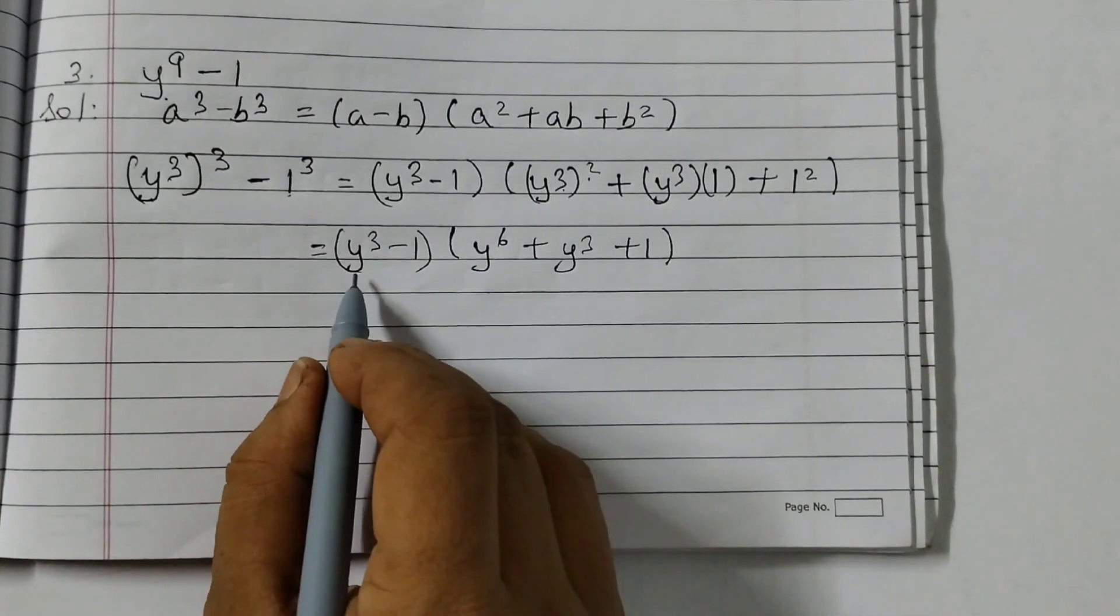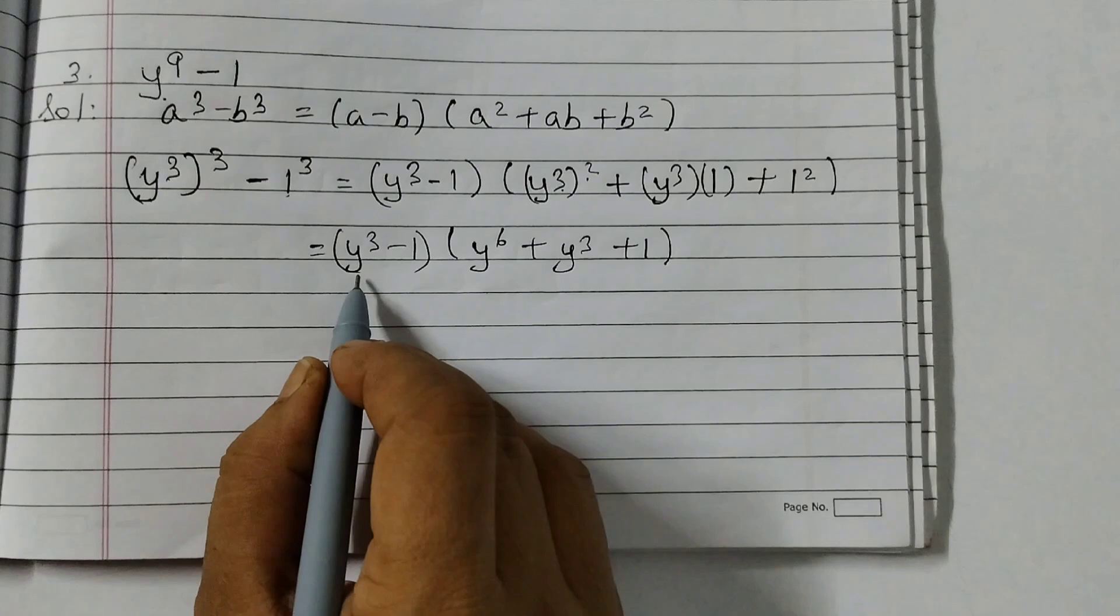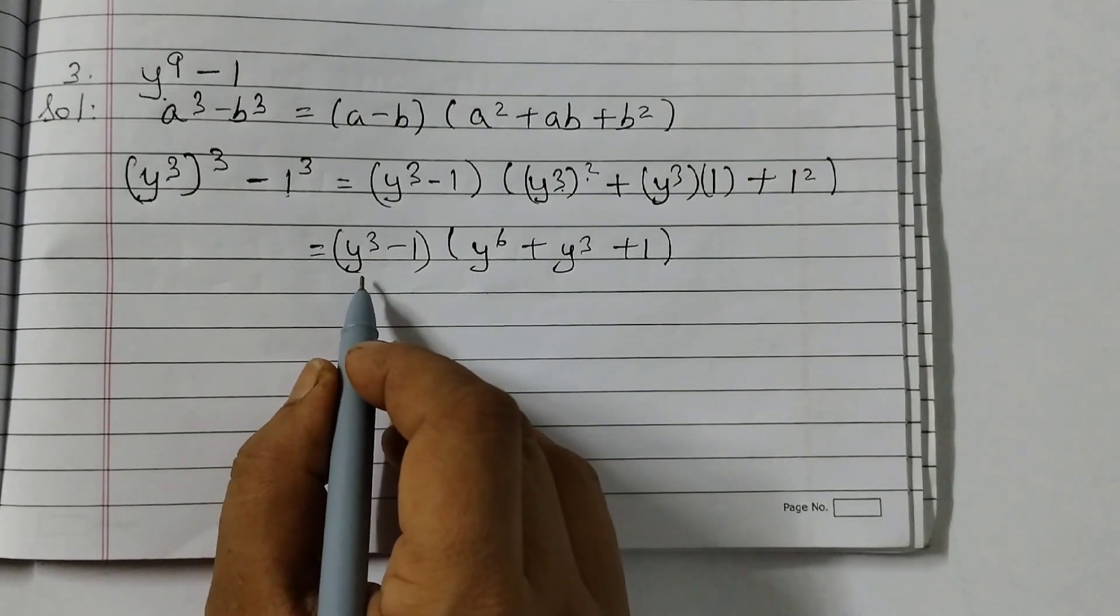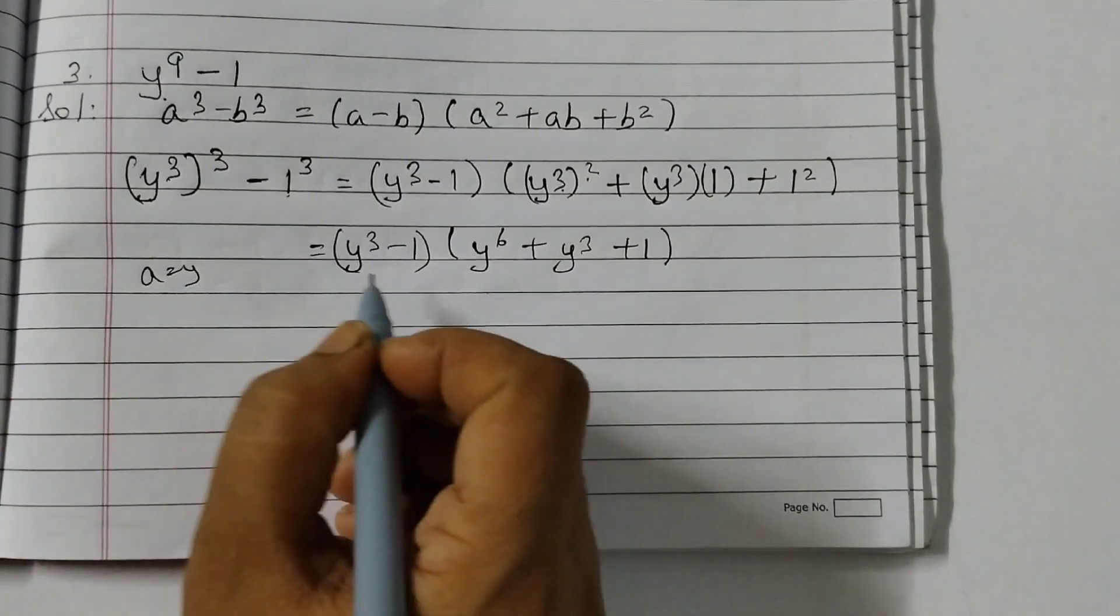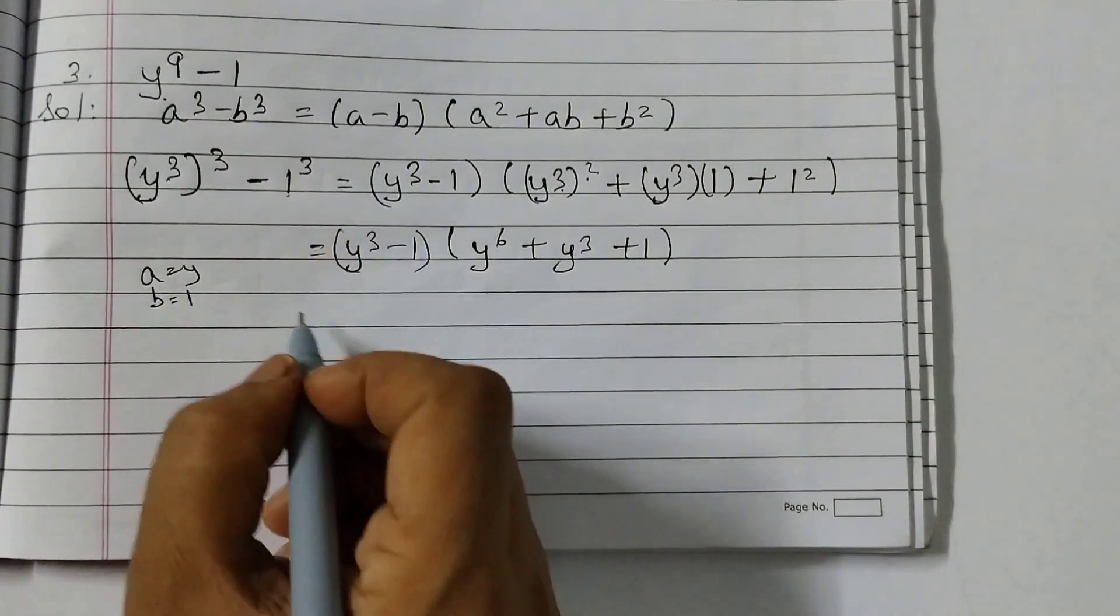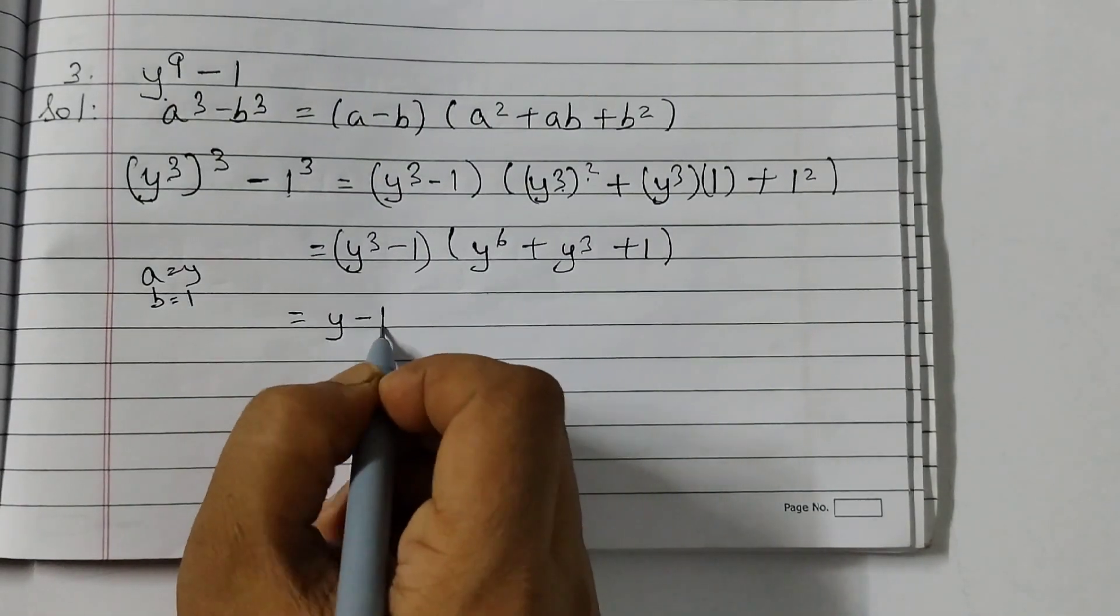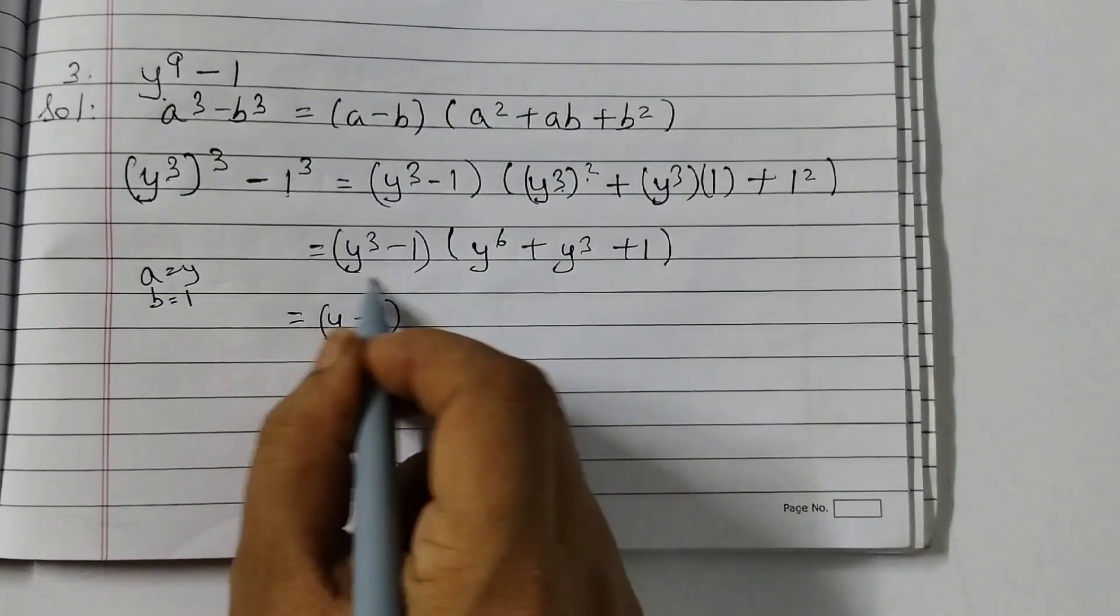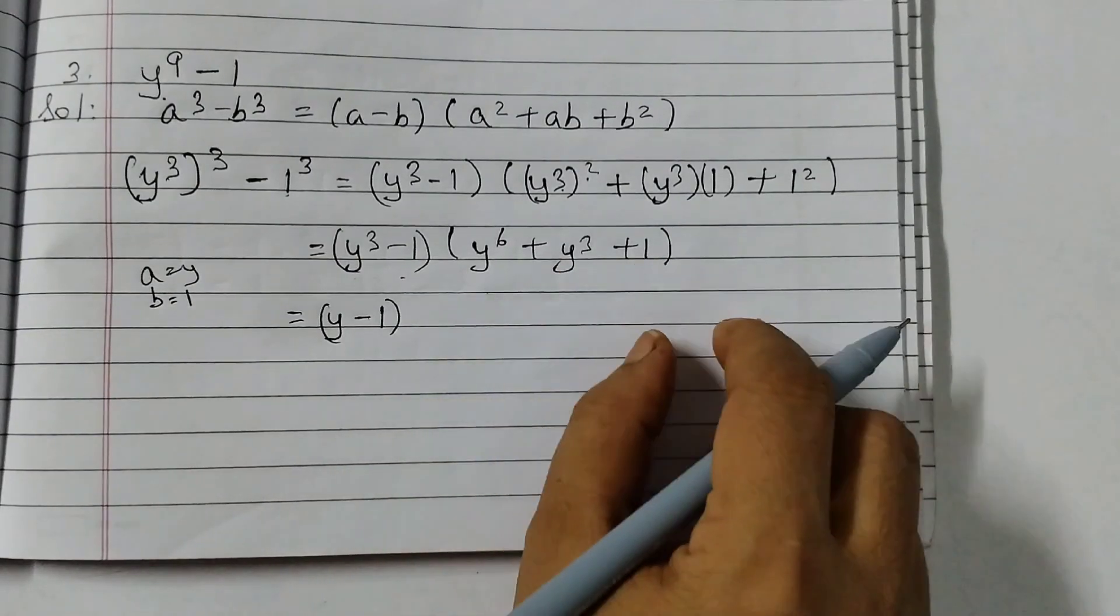Now see here this can be further factorized because this is again in the form of A cubed minus B cubed. So here we can take A as Y and B as 1 and apply the same identity. So this would become Y minus 1. We are doing only this part. This part we cannot simplify further, so this will come down as it is. We are just factorizing this part, Y cubed minus 1. 1 can be written as 1 cubed.